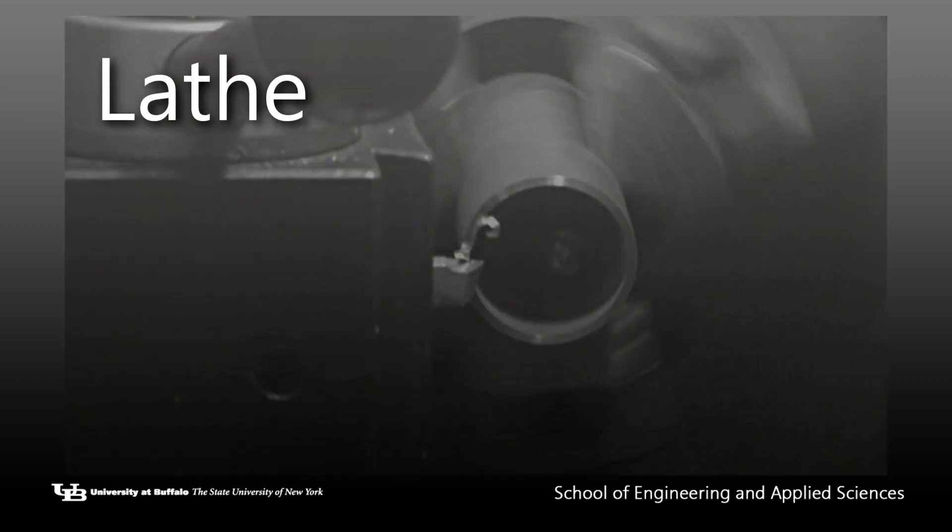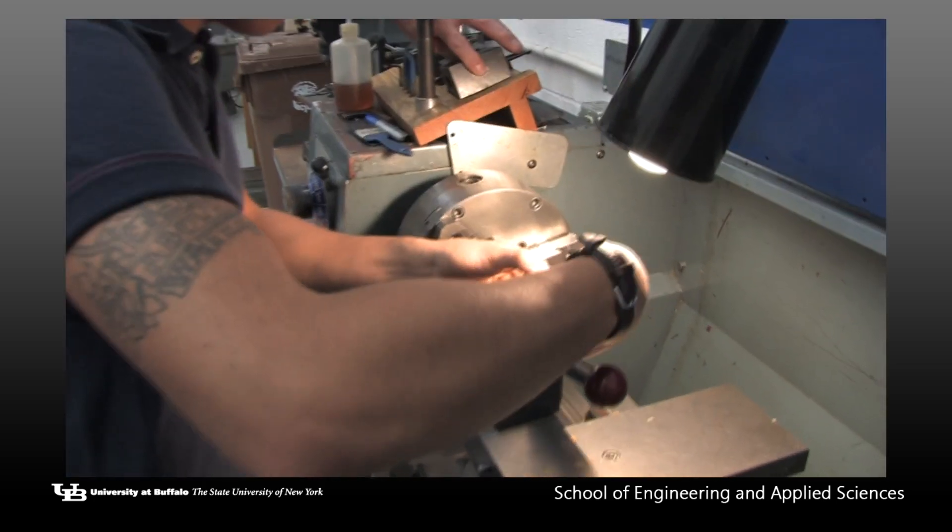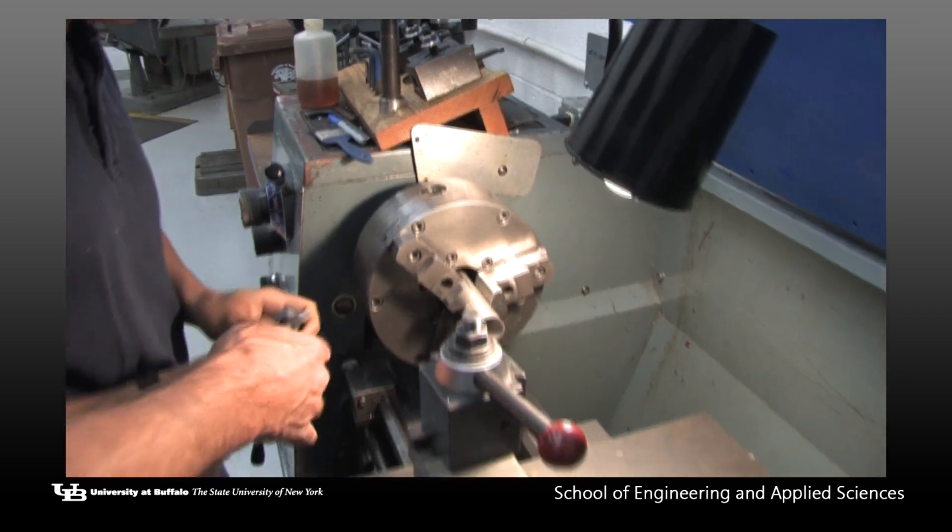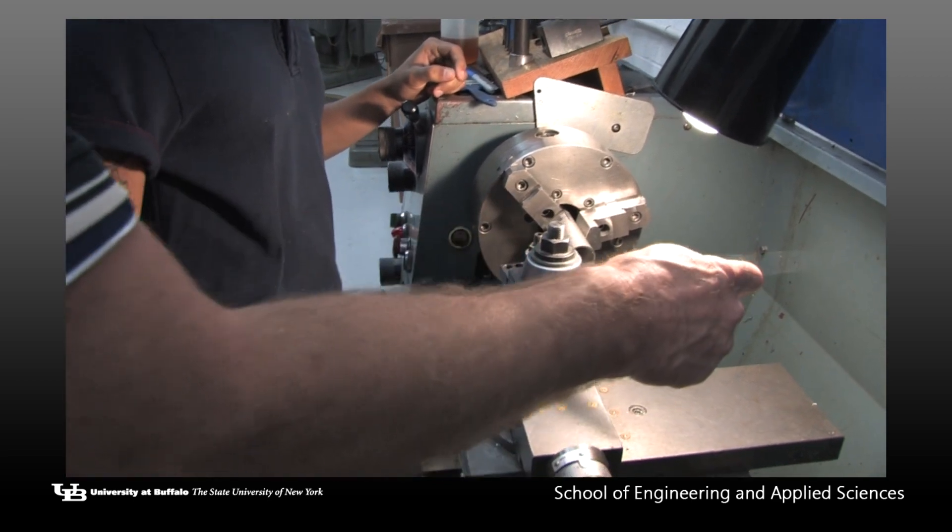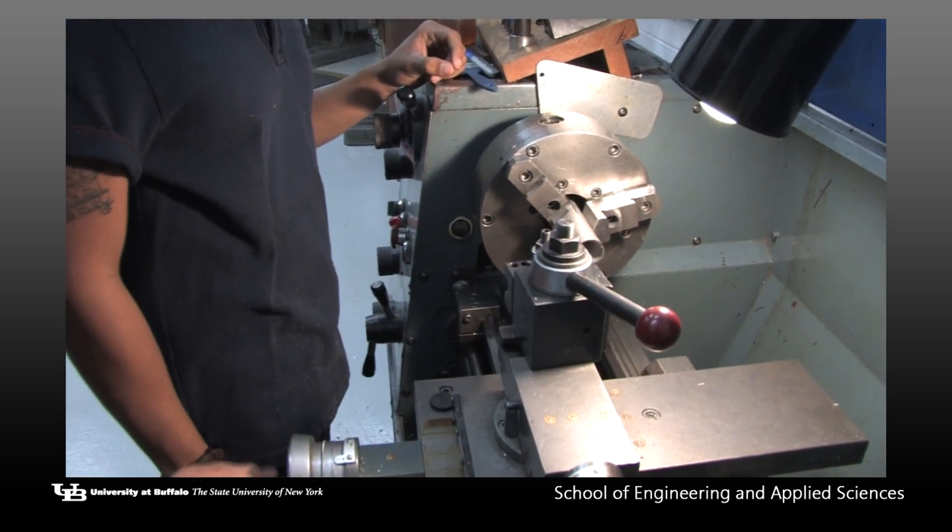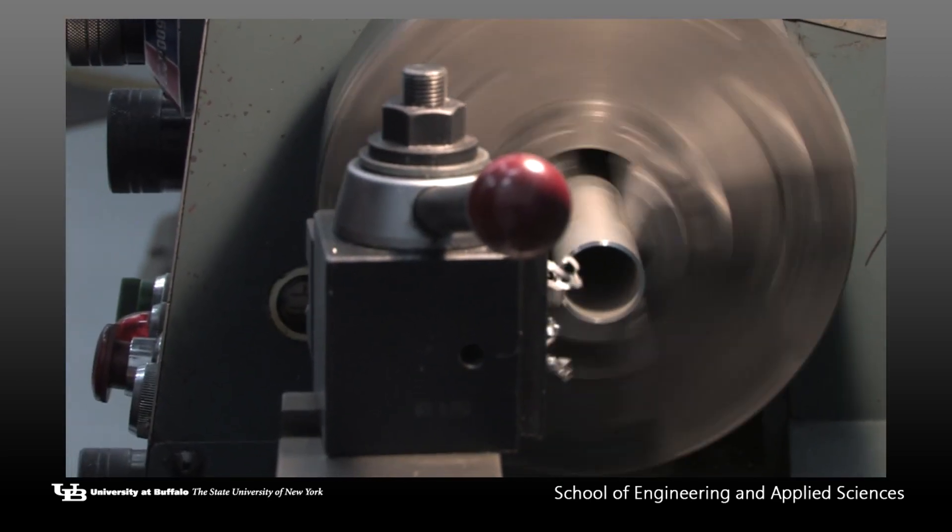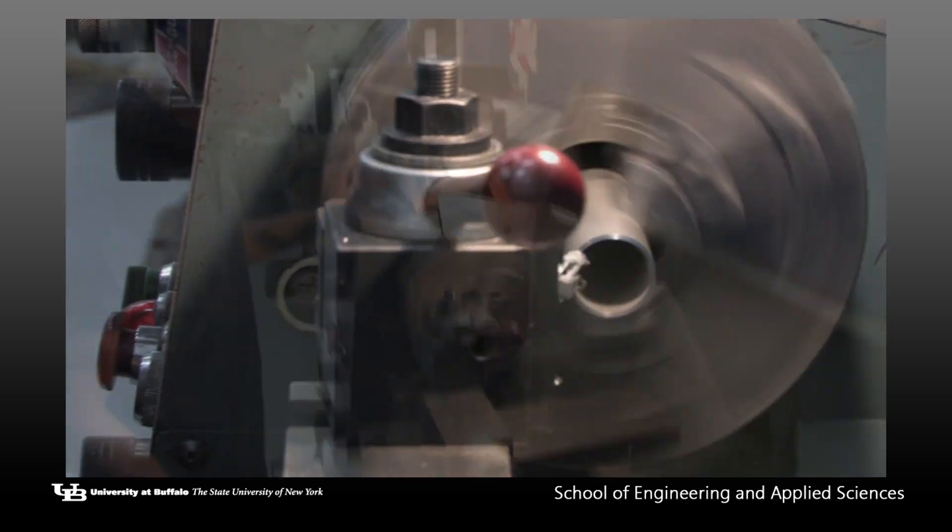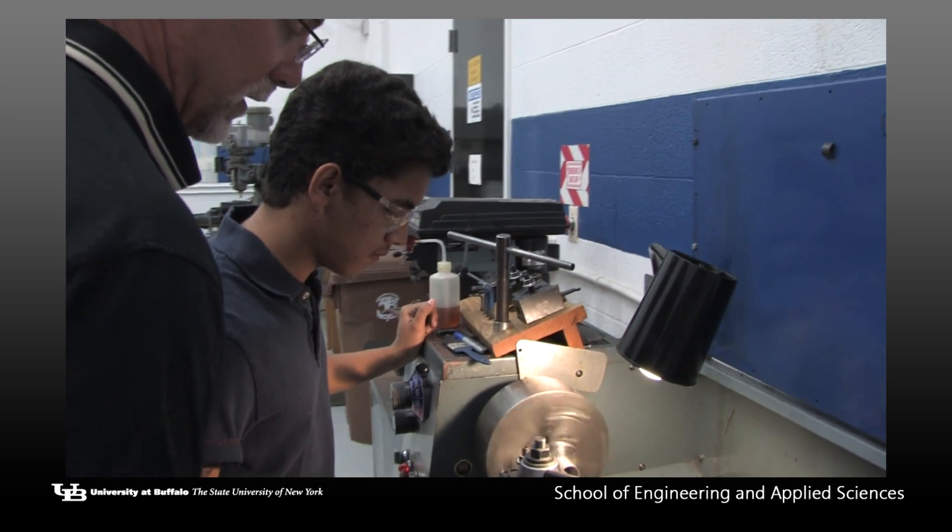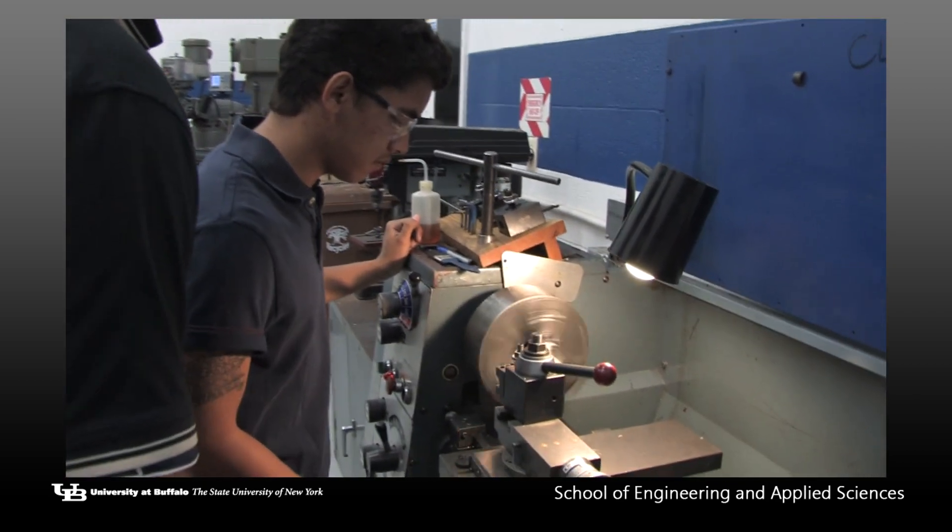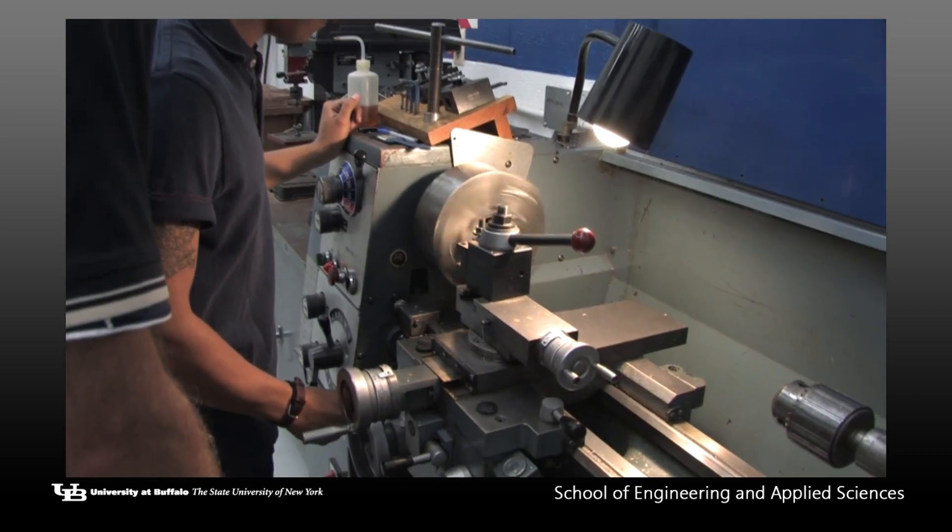Lathes are used for turning or cutting the outside, inside, or face of cylindrical parts. They can also be used for drilling holes in the center of a rotating part. Material on a lathe is rotated and the cutting tool is fixed for the most part with respect to the material. The different lathes in the shop all perform the same operation but are not all completely similar due to different manufacturers. It is important to be familiar with the particular machine you are using.